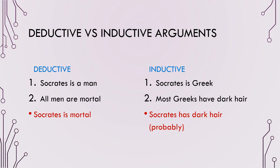If you look at the argument on the left: Socrates is a man, all men are mortal, therefore Socrates is mortal. This is a deductive argument because Socrates being mortal is guaranteed by the premises. In the inductive set on the right, the conclusion that Socrates has dark hair is only probable based on the premises that Socrates is Greek and most Greeks have dark hair.